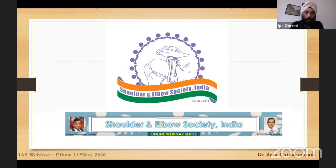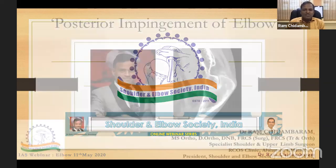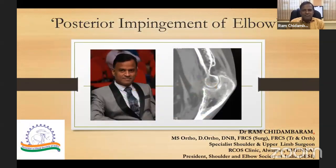Ram Chitambara, president of the Indian Shoulder and Elbow Society, will now talk on posterior impingement of the elbow. Posterior impingement is the pathologic impingement of the posteromedial tip of the olecranon process on the medial wall of the olecranon fossa. This is uncommon in the general population but common in overhead athletes.